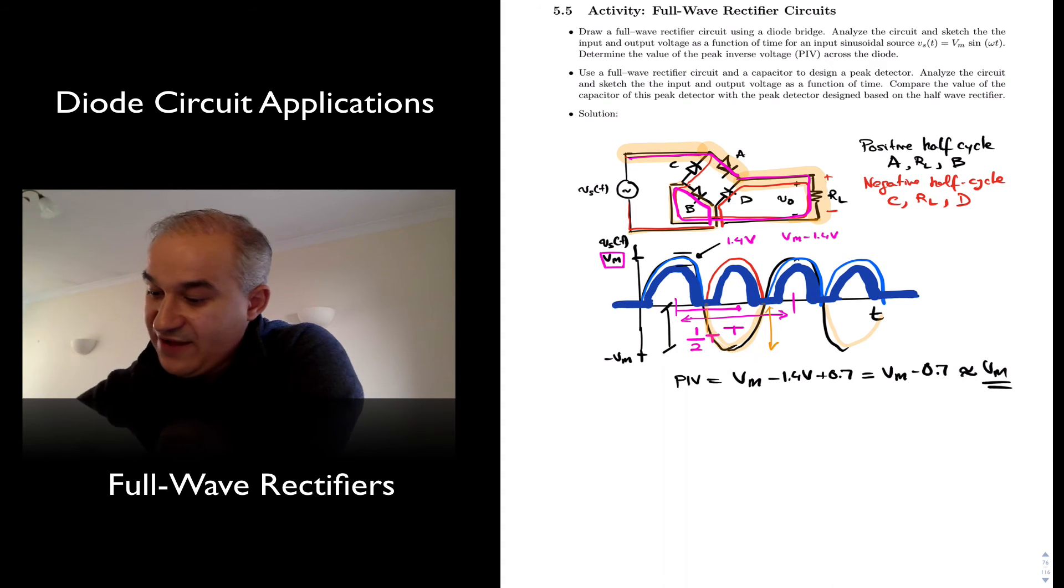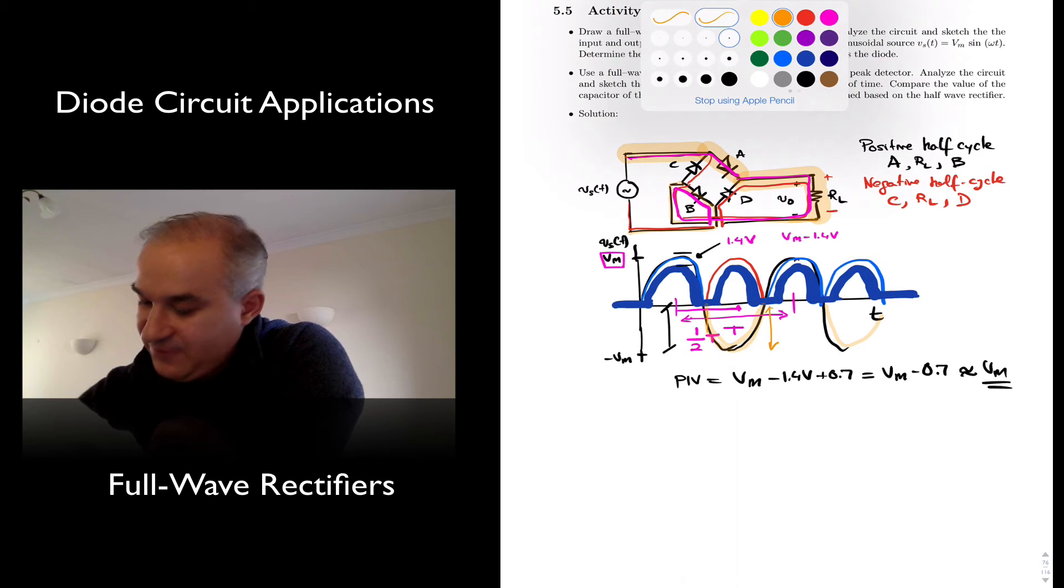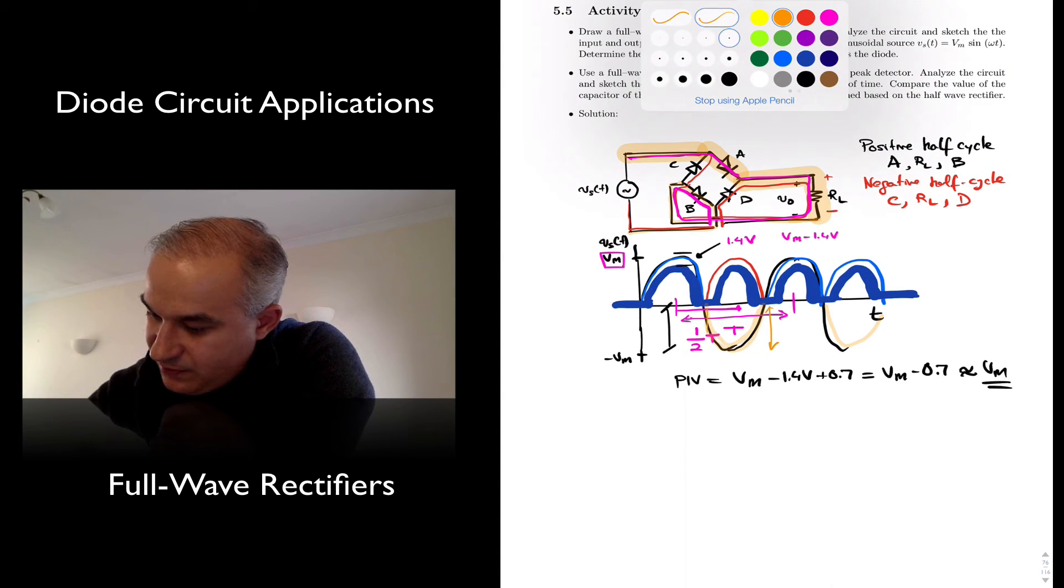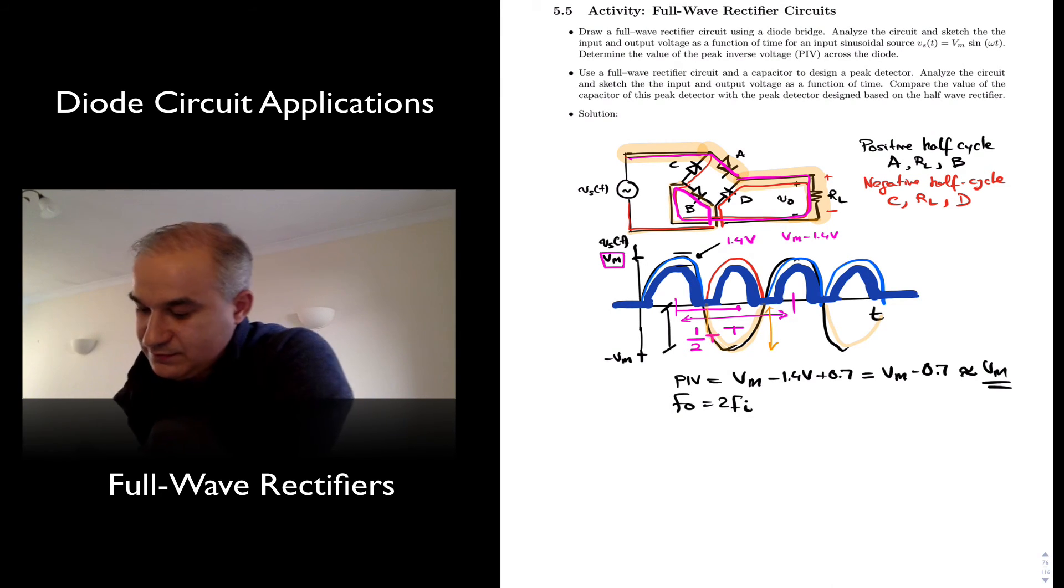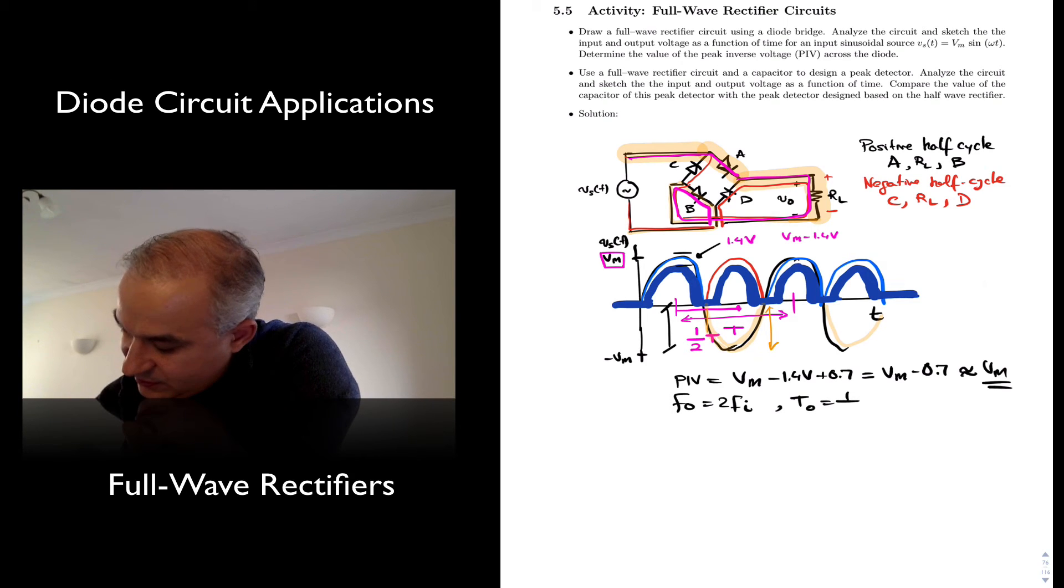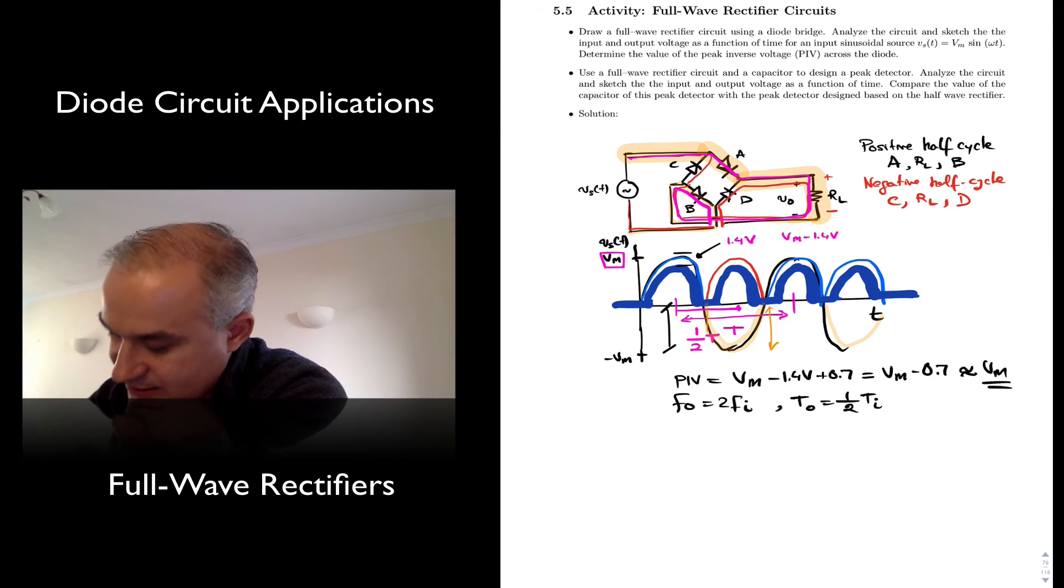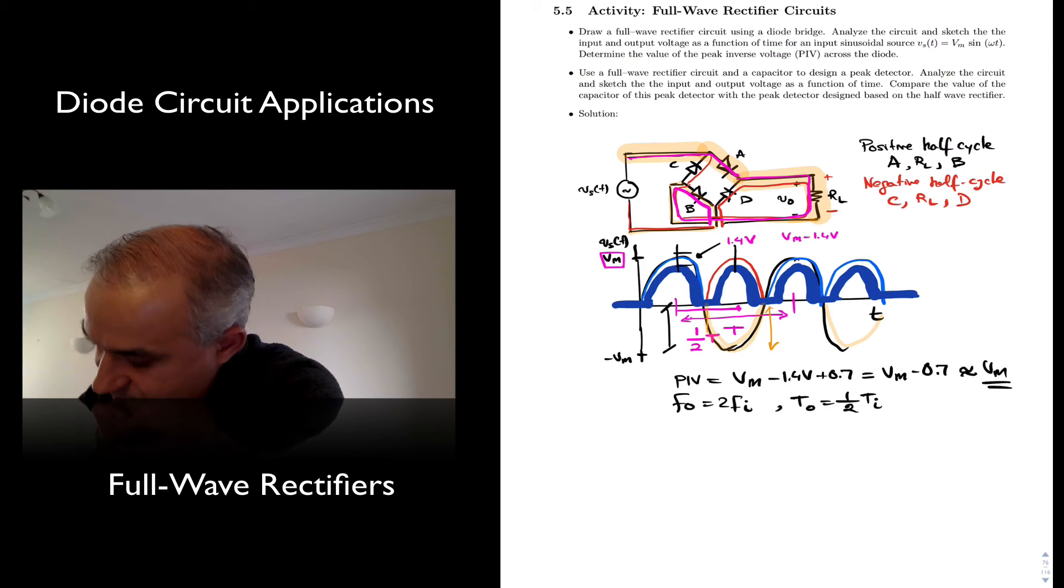Okay, so we have full-wave rectification. The frequency of the output waveform is twice the frequency of the input, or the period of the output is half the period of the input. As you can see, the period is half than what you had before.